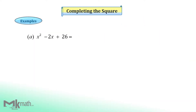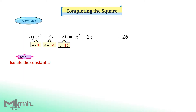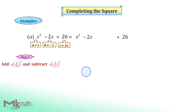Let's take a look at example a. First, identify each a, b, and c value. Step 1: isolate the constant 26. Step 2: this question has a equal 1 already. Step 3: add half the coefficient of the x term squared and then subtract the same value to keep the original expression.